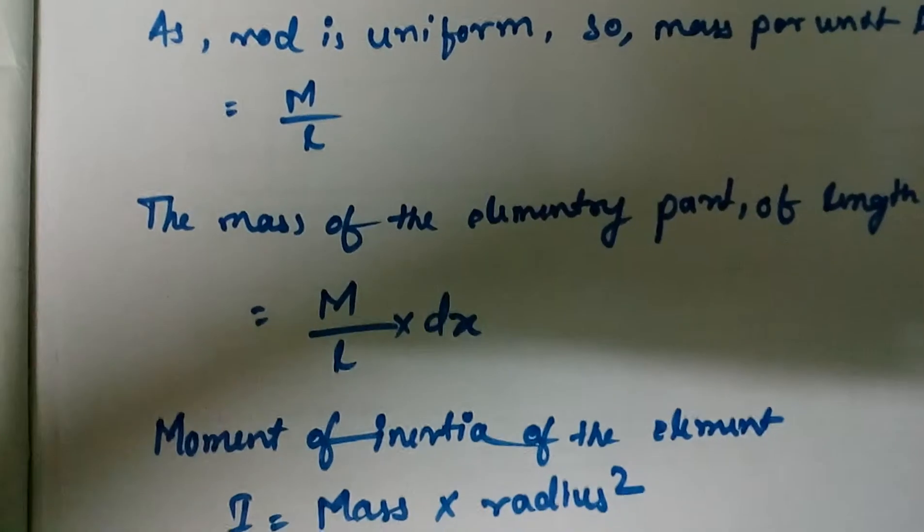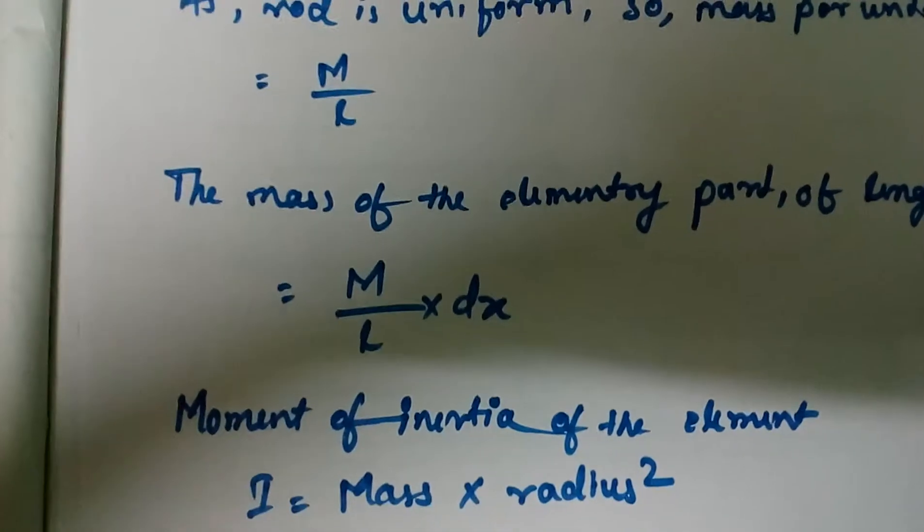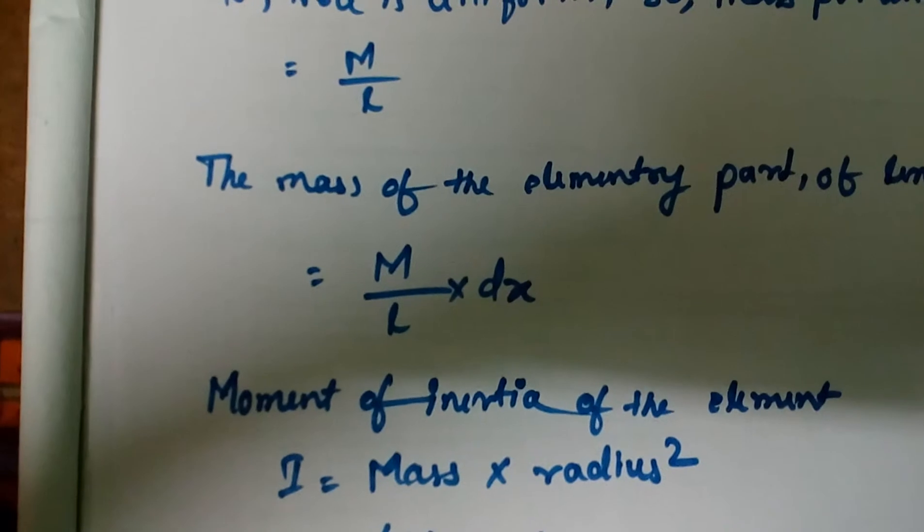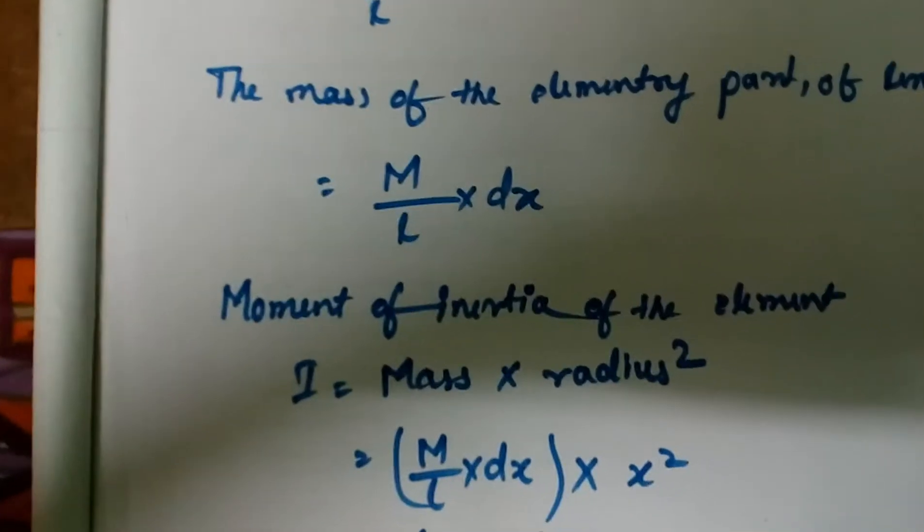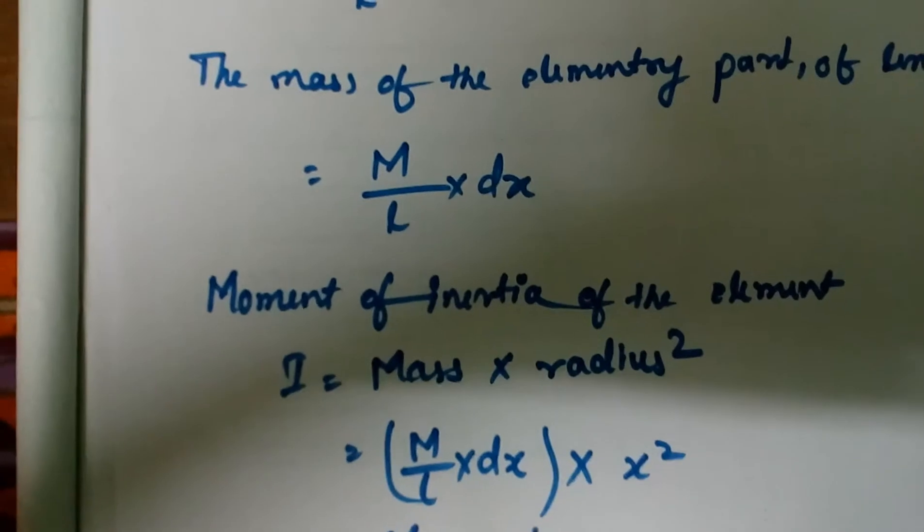The moment of inertia of the element, that is the elementary portion, equals mass times radius squared. This is the formula for calculating moment of inertia.